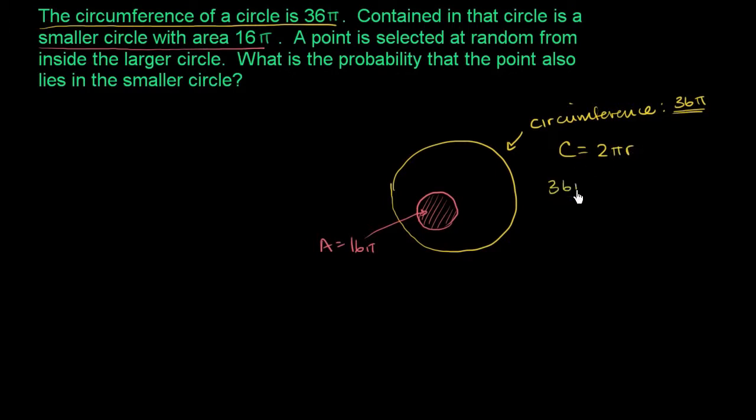So if we say 36 pi is equal to 2 times pi times the radius, we can divide both sides by 2 pi. On the left-hand side, 36 divided by 2 is 18. The pi's cancel out. We get our radius as being equal to 18 for this larger circle.